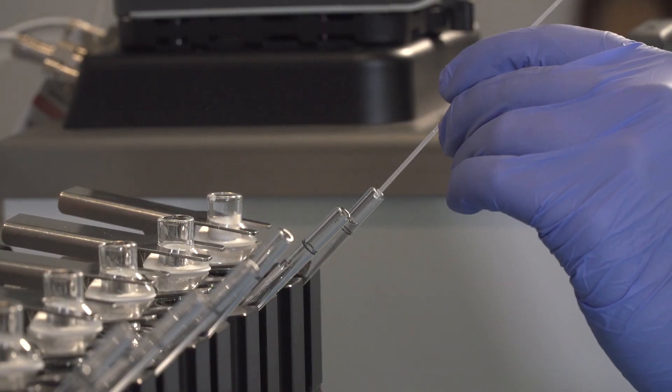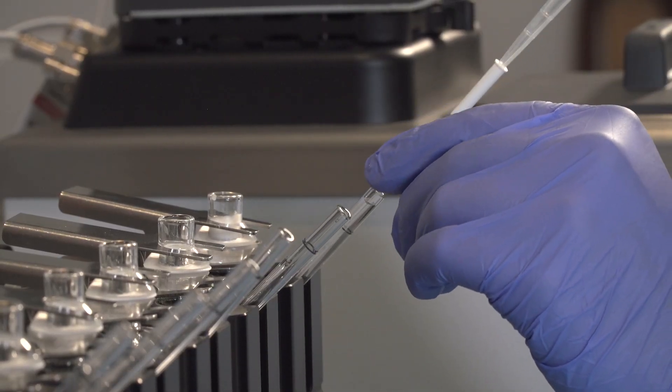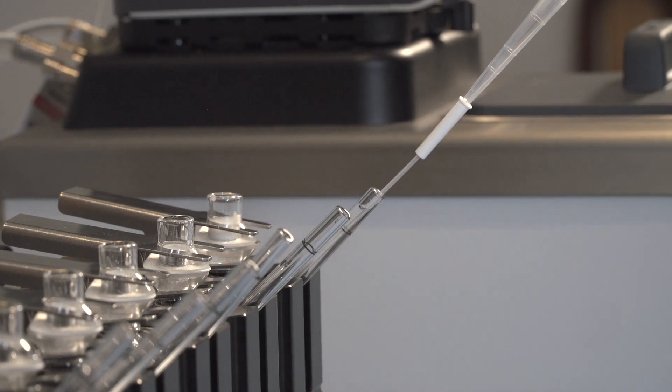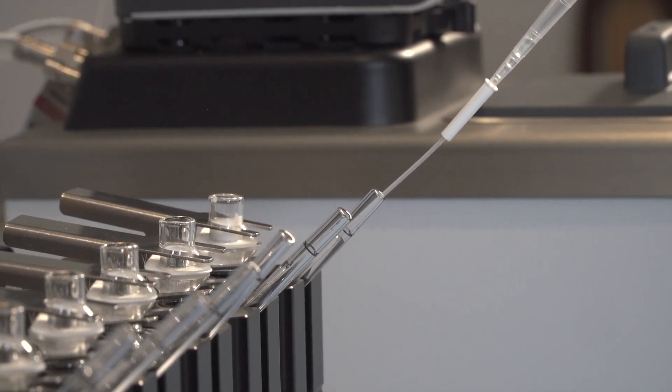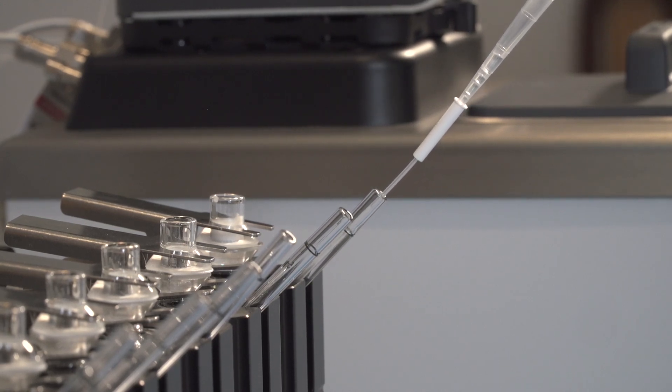To sample, depress the plunger of the pipetter to the first stop. Insert the PermeGear tip through the arm into the center of the cell and release the plunger. Wait three seconds to allow the receptor fluid to stop flowing for an accurate volume.